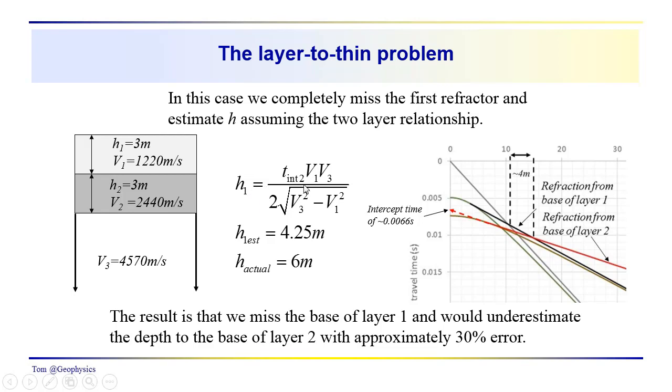So if we use the refraction time intercept approach for example. We have a time intercept in here which is 0.0066 seconds. We have our V1 and our V3. We estimate a thickness of, well I say H1, but a total thickness of layers 1 and 2 equal to 4.25 meters. When the actual thickness is 6 meters. This gives us an error of 30%. In this case we've underestimated the thickness. In the previous case with the velocity inversion problem we overestimated.